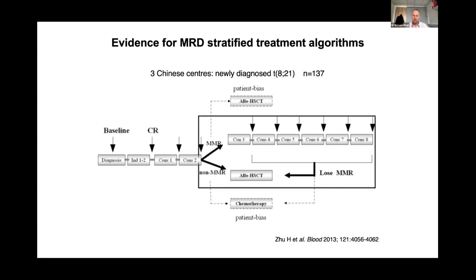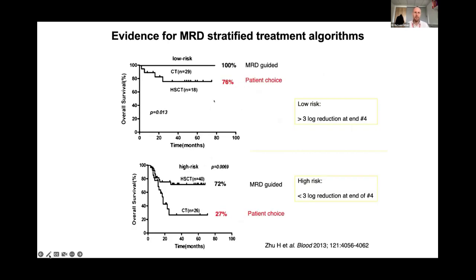The study was non-randomised because some patients allocated to chemotherapy insisted on transplant, and some allocated to transplant refused and had chemotherapy. Looking at those with the three log reduction, patients who received consolidation chemotherapy had 100% overall survival compared to 76% for those who had a transplant, suggesting you could actually do these patients harm by intervening with a transplant. For those with a poor MRD response, those who followed the protocol and had a transplant had a better outcome than those who refused. Again, this is non-randomised and highly biased, but that's the data we have.